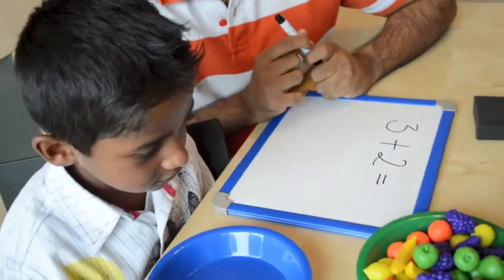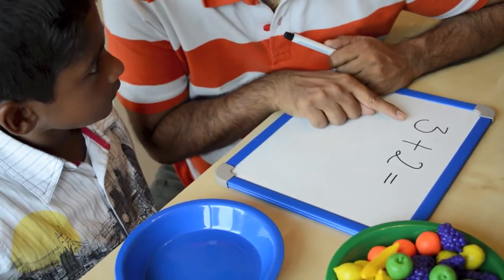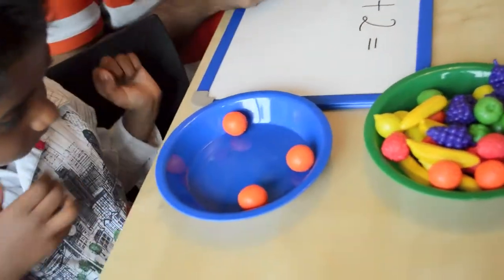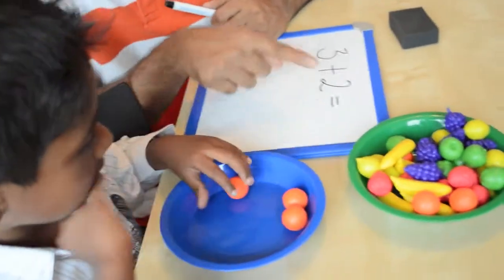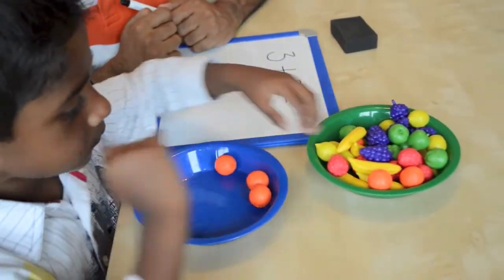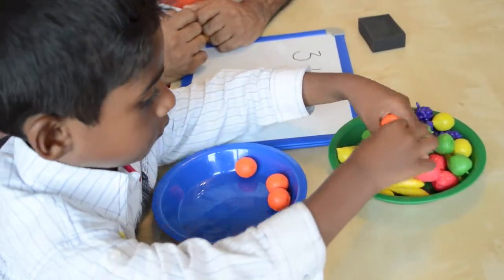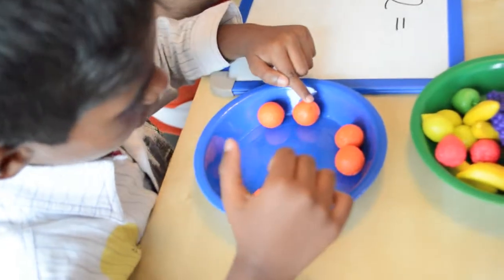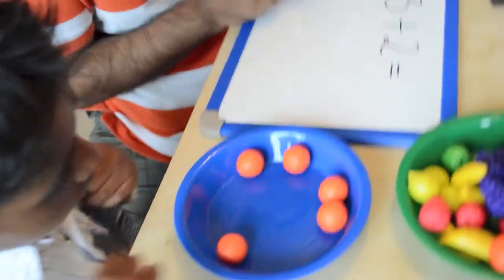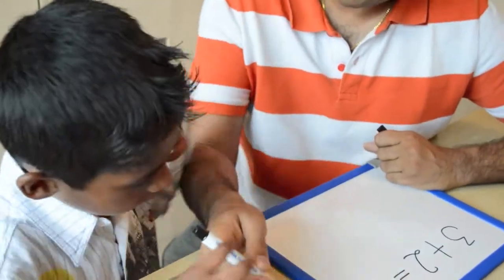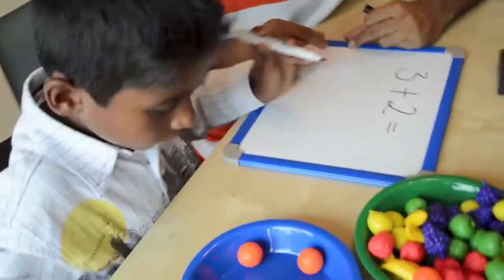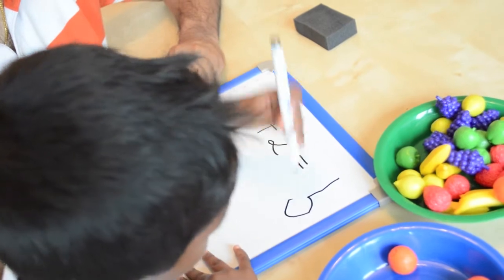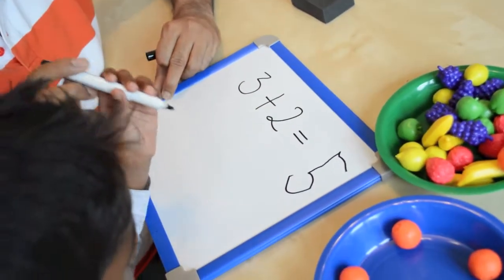Can you get for me please three oranges? One, two, three. Beautiful. Now we're going to add two more oranges. Can you get two more oranges? Fantastic. And how many oranges are in there now? Five. Wonderful. Would you like to write the answer down there, of three plus two equals? That is a beautiful number five. Fantastic.